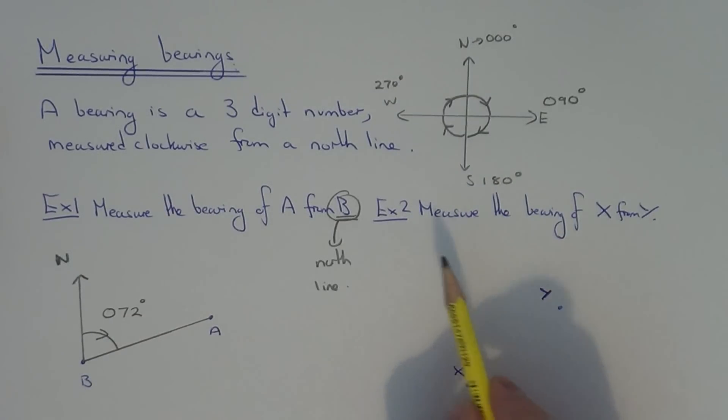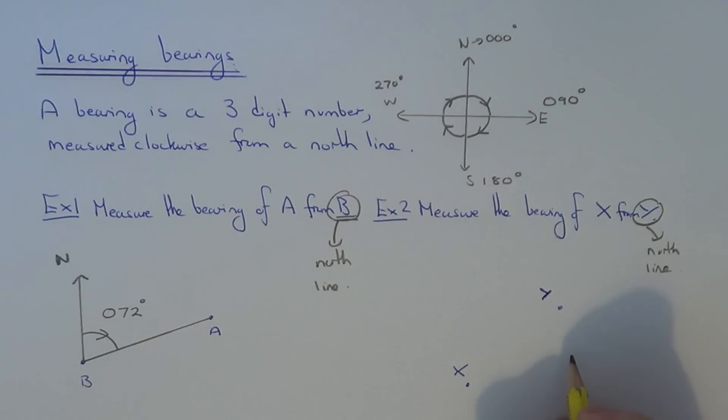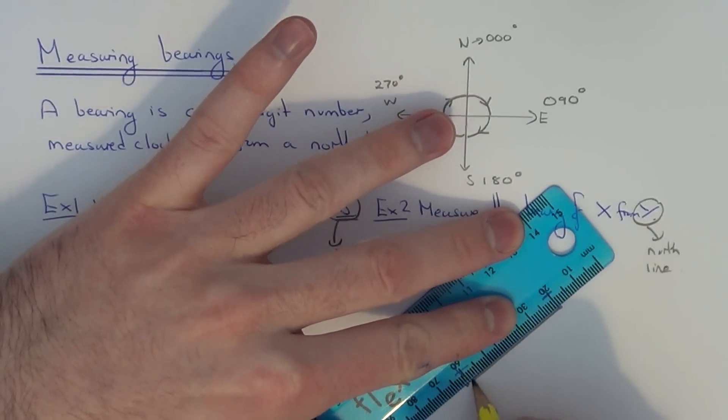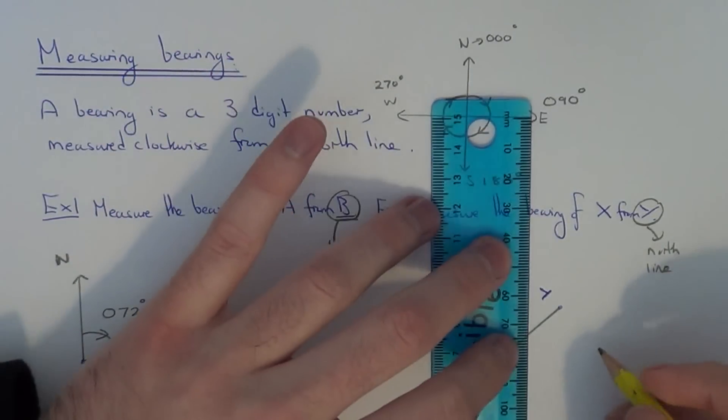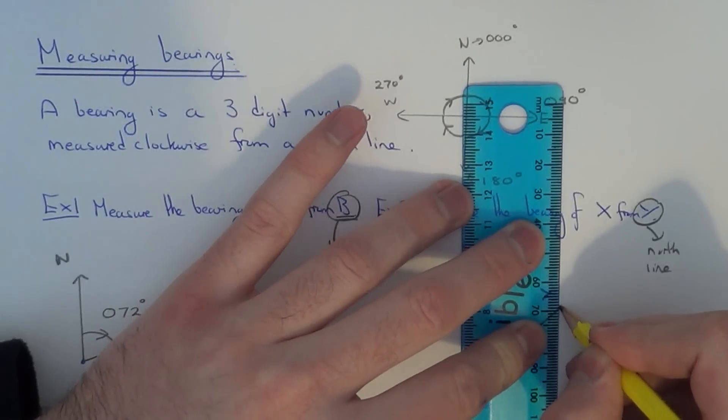Let's have a look at a harder example. In this one here we need to measure the bearing of X from Y. So it's telling us to measure the bearing from Y. So that's where we need to put our north line. So join up X and Y. Put our north line in at Y because we need to measure the bearing from Y.